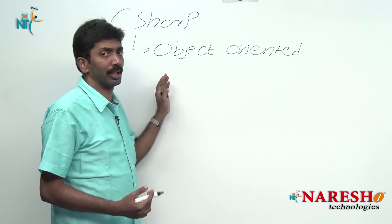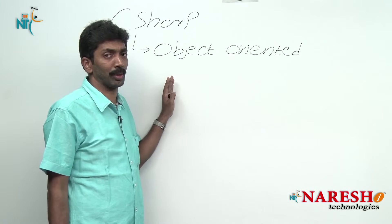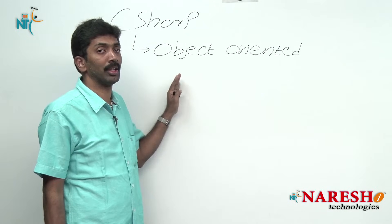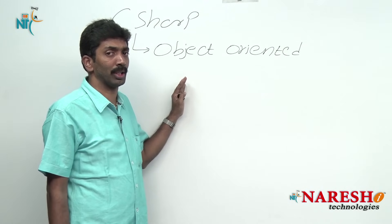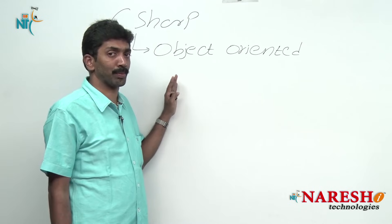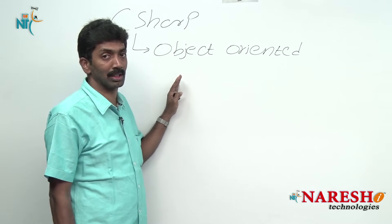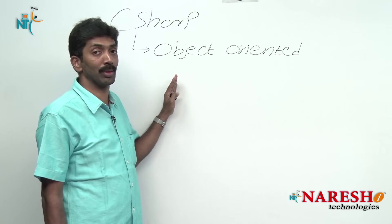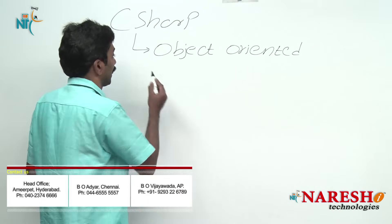The first great feature of C# is that it is object-oriented. The main strength of object-oriented programming is security and reusability. We will practically see what security and reusability mean in further videos.